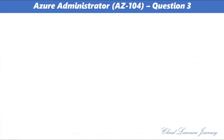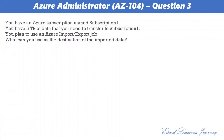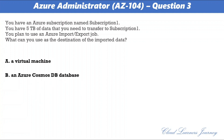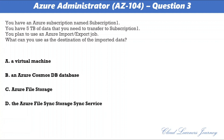Question number 3. You have an Azure subscription named Subscription 1. You have 5 TB of data that you need to transfer to Subscription 1. You plan to use an Azure Import/Export job. What can you use as the destination of the import/export data? The options are: a) a virtual machine, b) an Azure Cosmos DB database, c) Azure file storage, d) the Azure File Sync storage sync service.